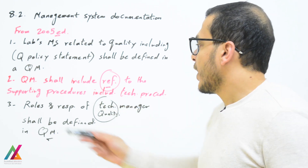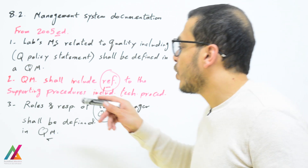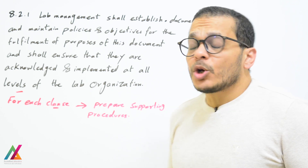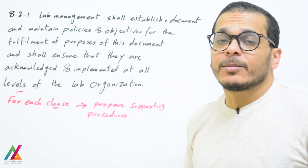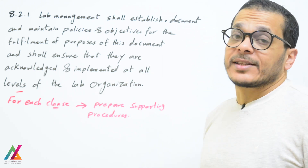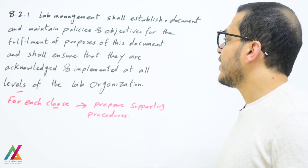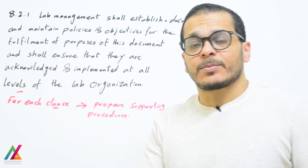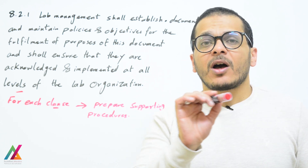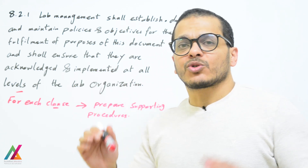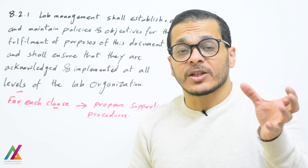Requirements to define technical procedures and roles and responsibilities of the technical and quality managers in the quality manual have also been removed in the 2017 edition. Now, the lab management shall establish, document, and maintain policies and objectives to fulfill the purposes of this document, and shall ensure these policies and objectives are acknowledged by personnel and implemented at all levels of the lab organization.